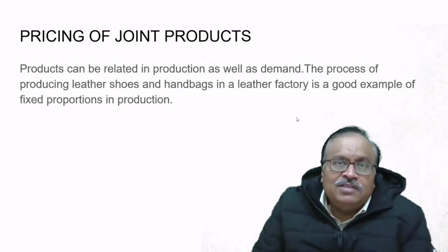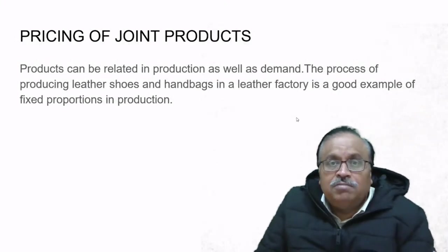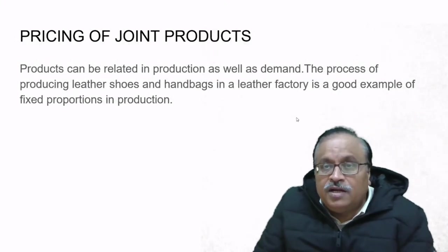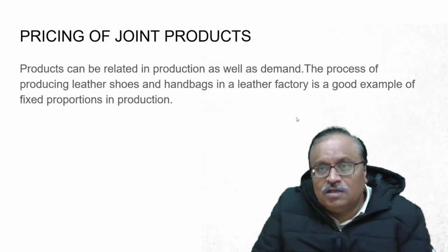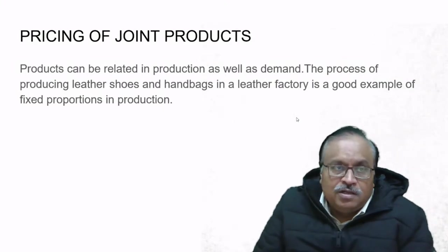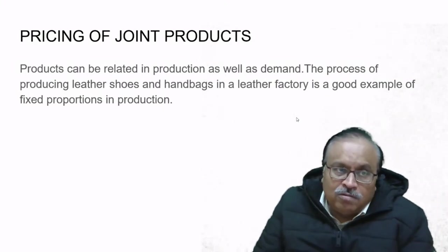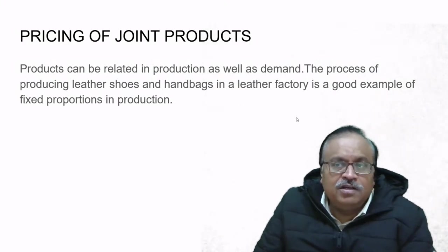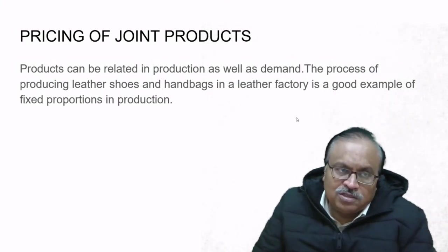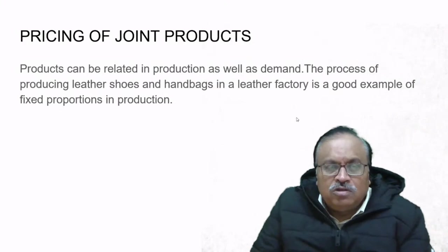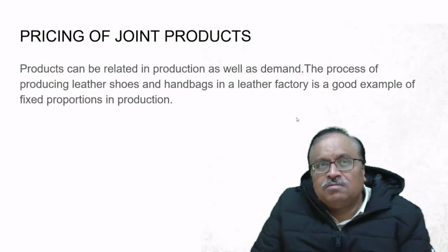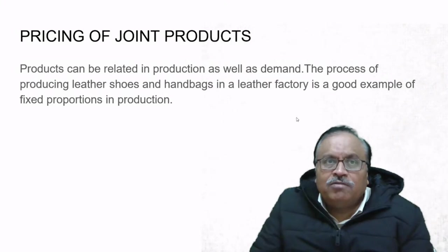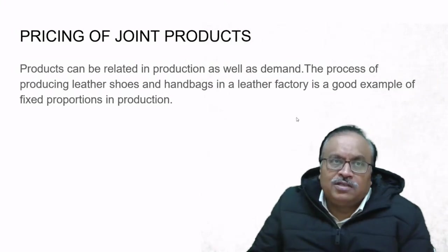Pricing of joint products: products can be related in production as well as in demand. The process of producing leather shoes and handbags in a leather factory is a good example of fixed proportions in production. From one raw material—leather—we can manufacture shoes, handbags, or any type of leather cover required.